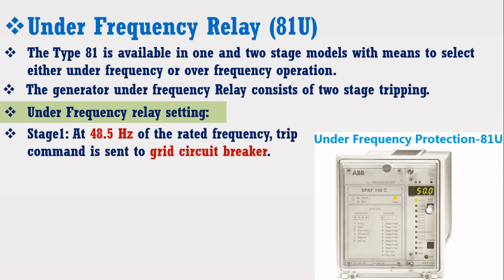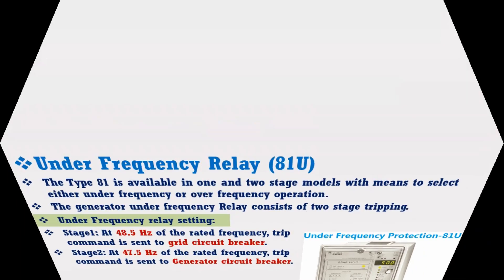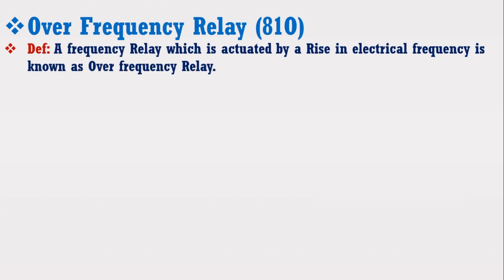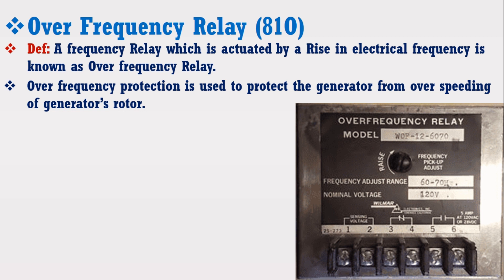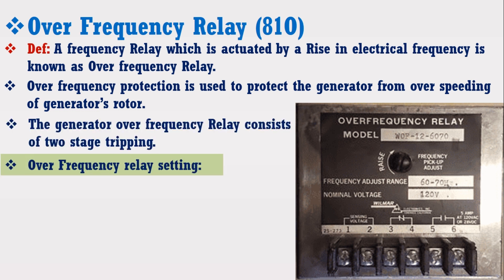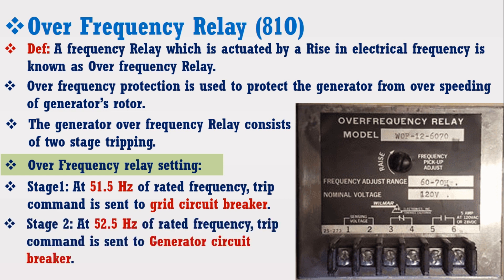The generator under frequency relay consists of two stage tripping. In stage 1 at 48.5 Hz of the rated frequency, a trip command is sent to the grid circuit breaker. Whereas in stage 2 at 47.5 Hz of the rated frequency, a trip command is sent to the generator circuit breaker. A frequency relay which is actuated by a rise in electrical frequency is known as over frequency relay. Over frequency protection is used to protect the generator from over speeding of the generator's rotor. The generator over frequency relay also consists of two stage tripping. In stage 1 at 51.5 Hz, the trip command is sent to the grid circuit breaker, whereas in stage 2 at 52.5 Hz, the trip command is sent to the generator circuit breaker.